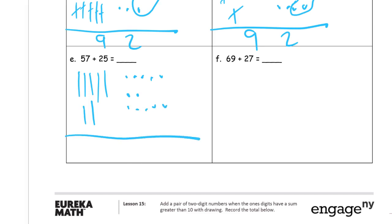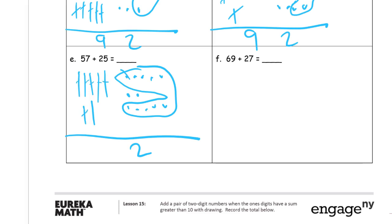I'll write my totals underneath this line and I see the two fives right here. Those will make a ten. One, two, three, four, five, six, seven, eight tens — 82.